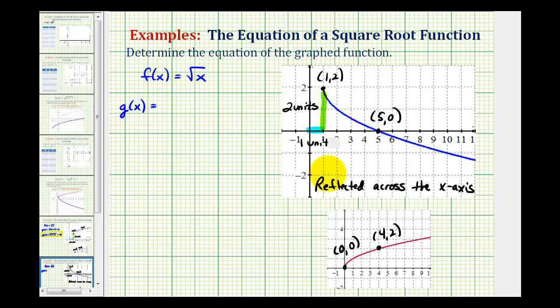since the function has been reflected across the x-axis, we would have negative f of x, but because it's been shifted right one unit, we'd have f of the quantity x minus one, and then because it's been shifted up two units, we would have plus two. Again,